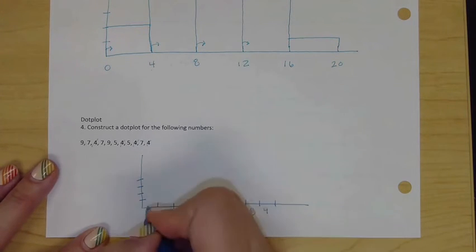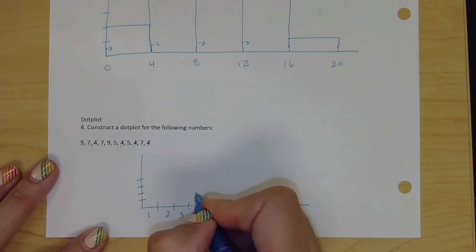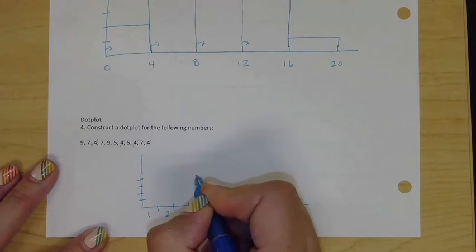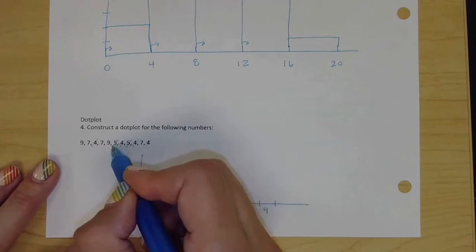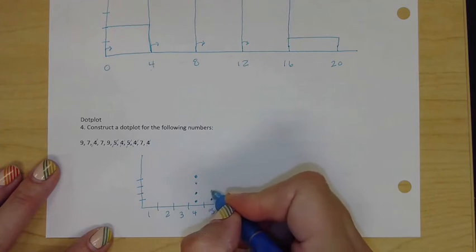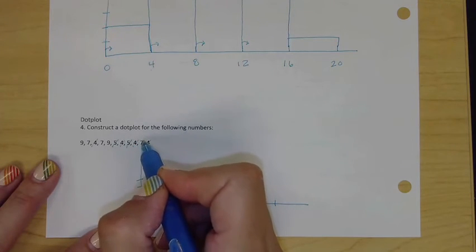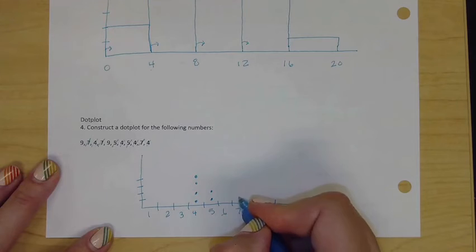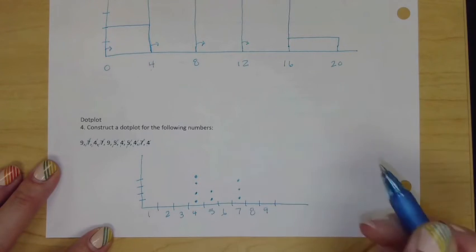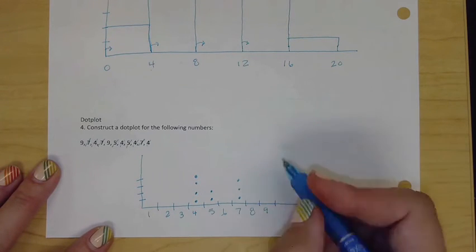We have one two three four fours, so we're going to make little dots. One, two, three, four. Then how many fives? One, two. And sevens, one, two, three. No eights, two nines.